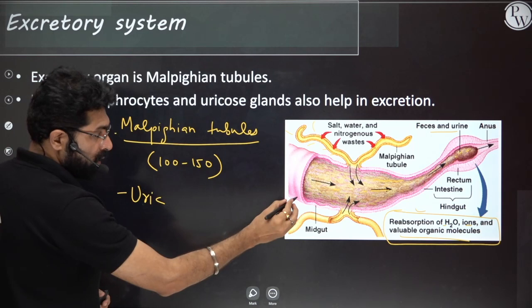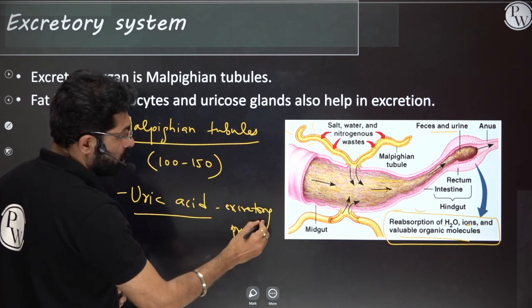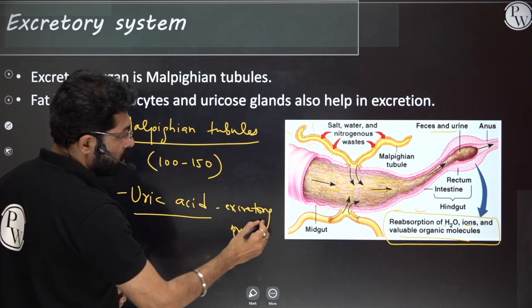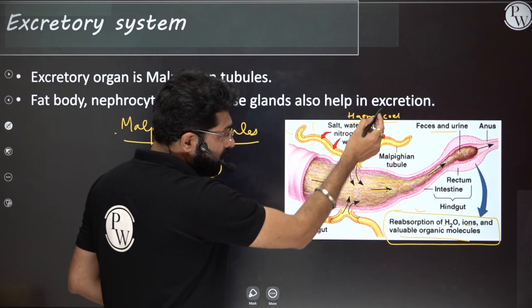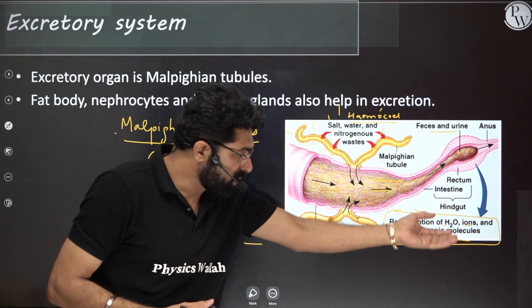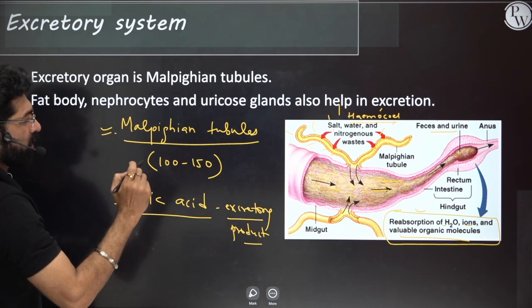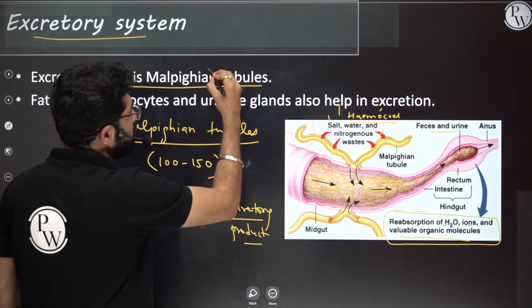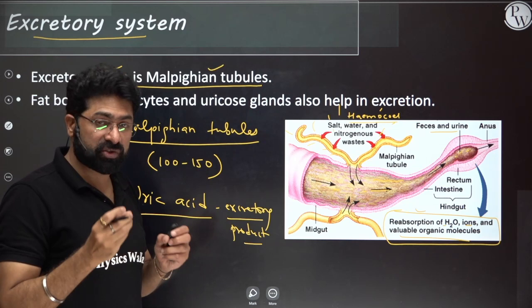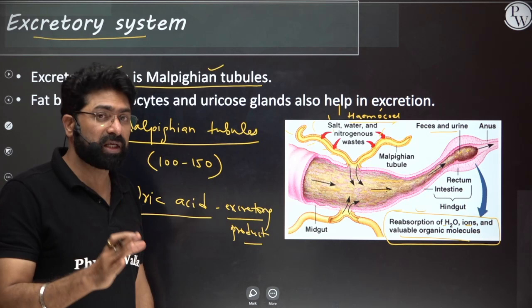The excretory product of cockroach is uric acid. Nitrogenous waste from the hemocoel comes in the form of potassium urate, which is converted to uric acid; useful substances are reabsorbed. The main excretory organ is Malpighian tubules, but cockroaches also have other excretory structures: fat bodies, nephrocytes near the heart, and uricose glands — exclusively in males.